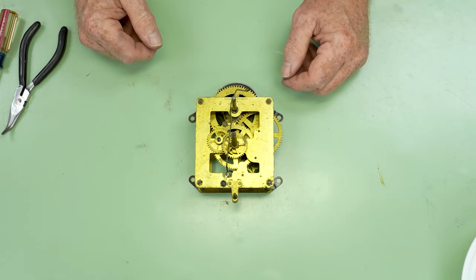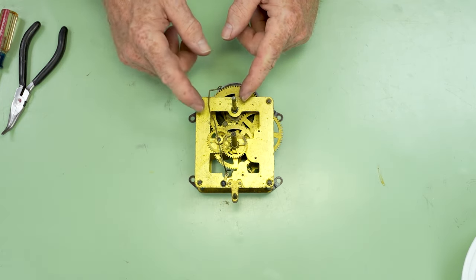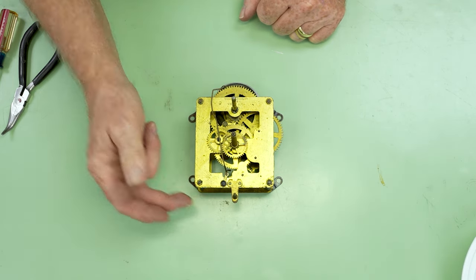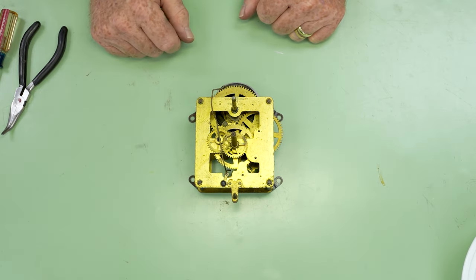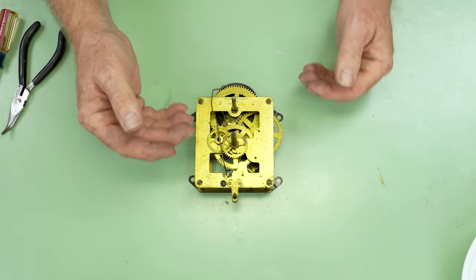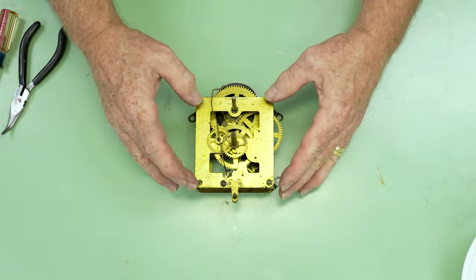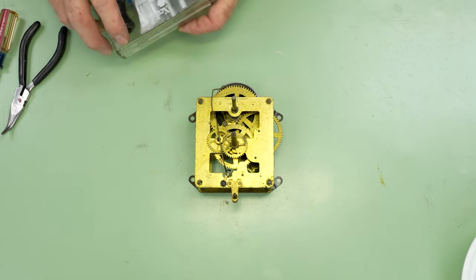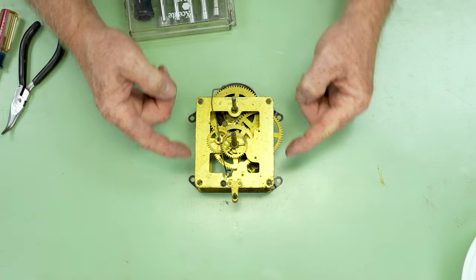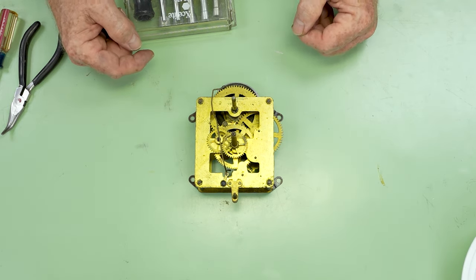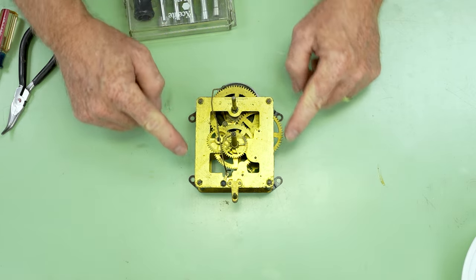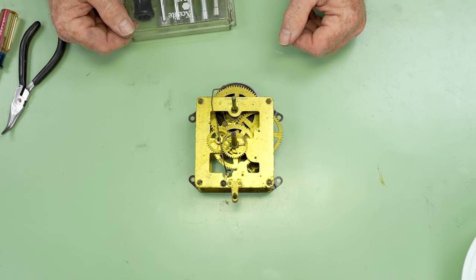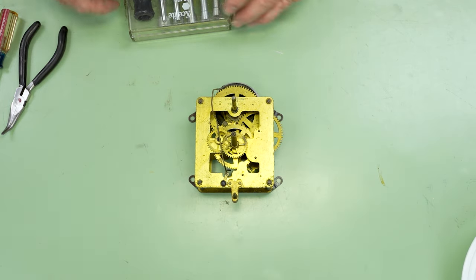So we have the pendulum rod suspension spring removed. We still have our crutch in place here. And we're going to deal with that later because the escapement is between the plates on this particular movement. So at this stage, what we're going to do is remove these four pillar nuts, as they're called. Older movements will have tapered pins in their pillars that are holding the plates together. These are nuts. So again, that tells me that this is a newer movement. And that kind of verifies to me that the 1929 date is probably a good one.